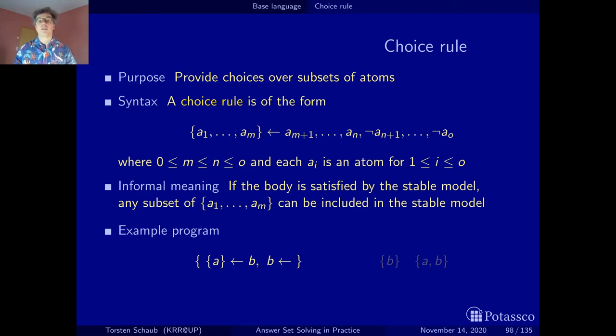We get two stable models, and now something interesting happens. We have two stable models, one with b and one with a and b, and once we have these choices we don't have this necessity to derive every atom anymore. Suddenly, stable models can be included in one another. This is a subset of this stable model. One of the properties of normal logic programs was that stable models are never contained in each other. But keep in mind, this is not a normal logic program - we have a choice. And this is one of the features that it brings about.